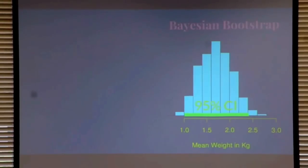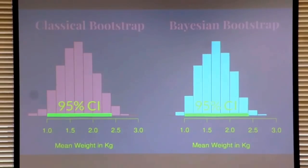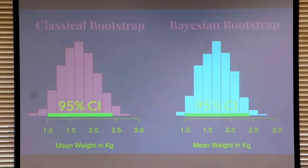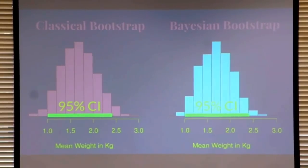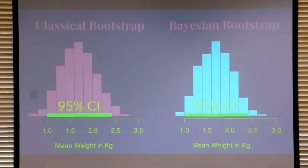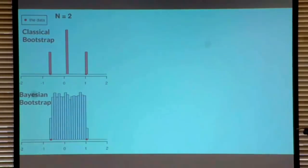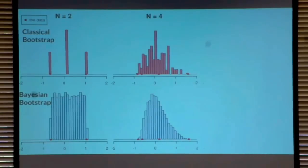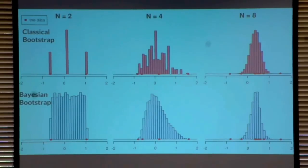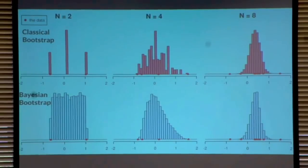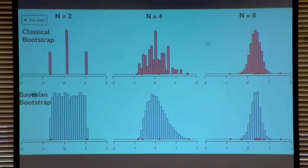If you compare the distribution from the Bayesian bootstrap to the distribution from the classical bootstrap, you'll notice they look similar — because they are. They have the same expected value, almost the same variance, and they become more and more similar the more data you have. They're only really dissimilar with very little data: with just two data points, the Bayesian bootstrap gives a uniform distribution, but the classical bootstrap gives three spikes. With enough data, you can use the classical boot function in R and interpret the result as if you ran the Bayesian bootstrap.